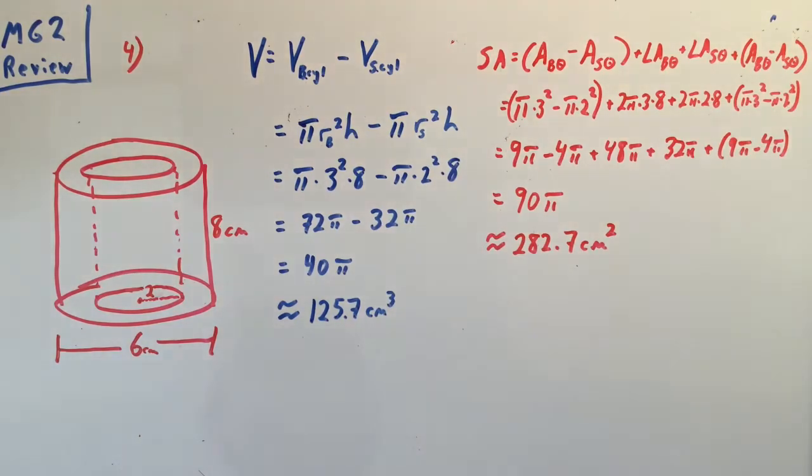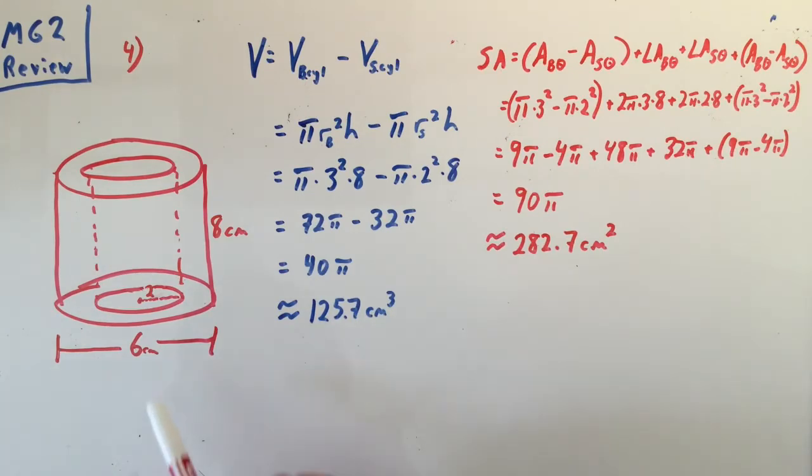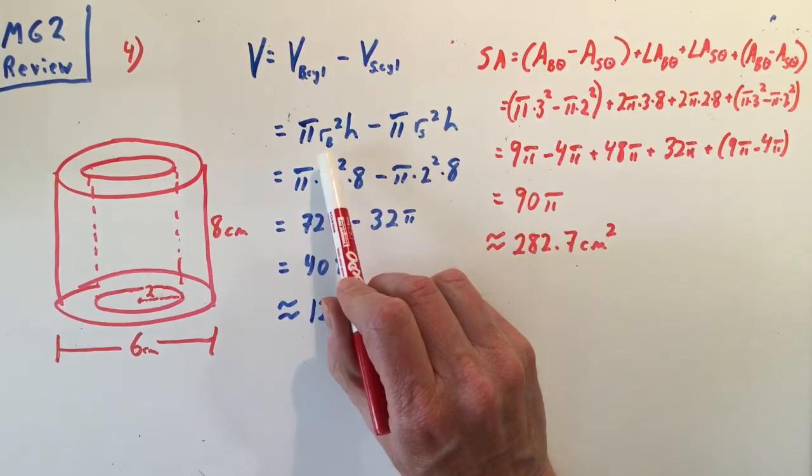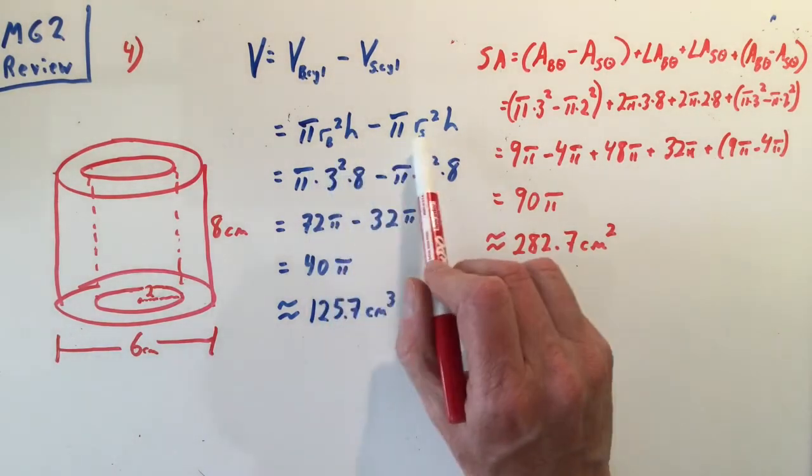In order to do that we're going to need the radius of the big cylinder, which is going to be three since the diameter is six, and we're going to need the radius of the small cylinder, which is two. Notice I labeled these variables r sub b and r sub s because they're actually two different radii.